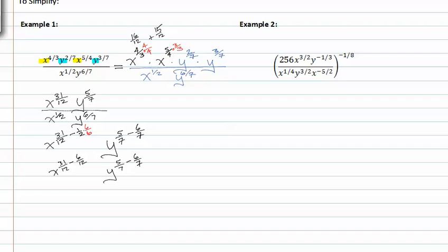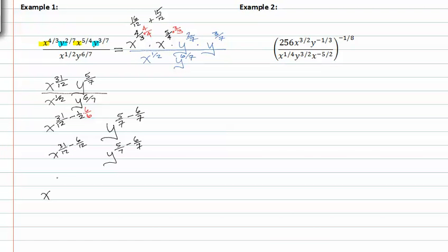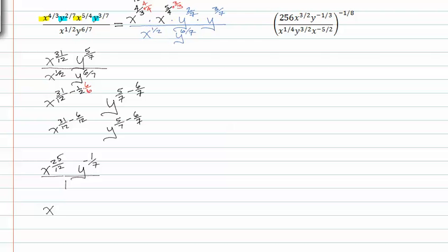This simplifies to x to the twenty-five-twelfths, y to the negative one-seventh. To get that negative exponent positive, I simply shift it across the fraction bar to make the exponent positive. My final answer is x to the twenty-five-twelfths over y to the one-seventh, and it's positive.